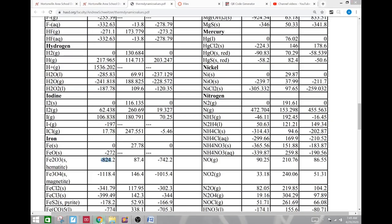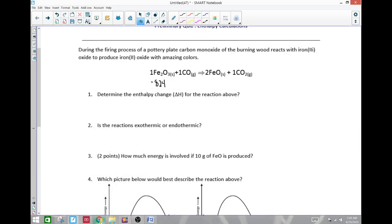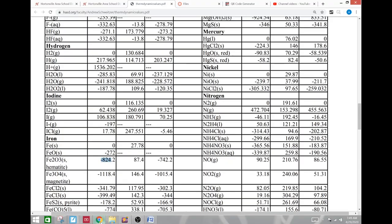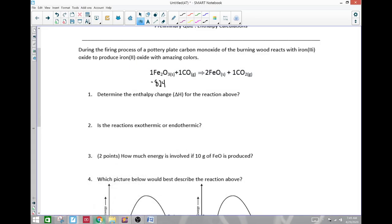Alright, and then yep, 824. And iron oxide, iron 2 oxide, should be right next to it. Iron 2 oxide right there is negative 272. Alright. A lot of this here at this point is just data collection.